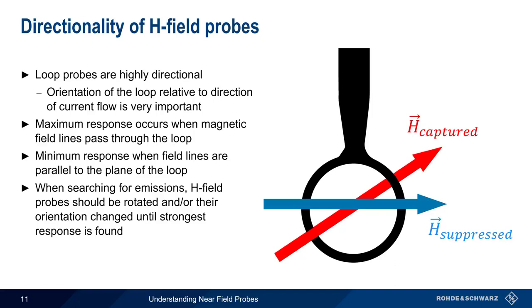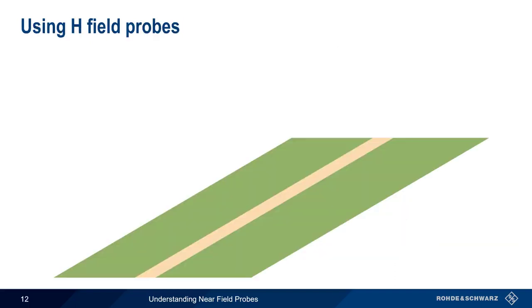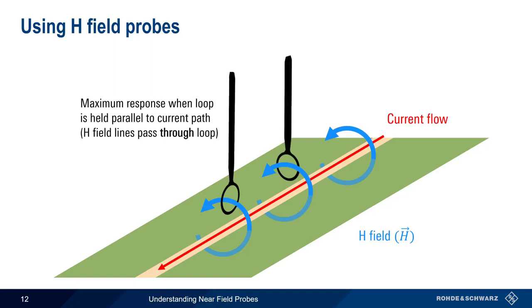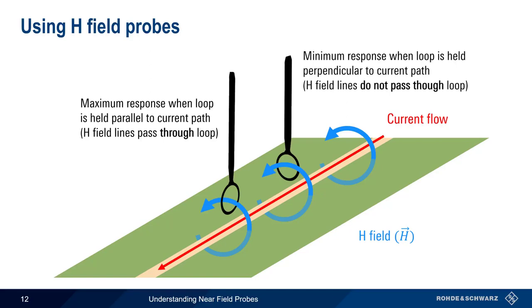Let's take a closer look at how this works. Here we see a PCB with a single trace. When current flows in this direction along the trace, it produces magnetic field lines as shown. If we position an H-field loop probe such that the plane of the loop is parallel to the current path, the field lines will pass through the loop, and maximum response is seen. If, on the other hand, we position the loop such that the plane of the loop is perpendicular to the direction of current flow, the magnetic field lines will not pass through the loop, and minimum response occurs. From this example, it should be clear why rotating the loop can be helpful when trying to determine the source of an emission.